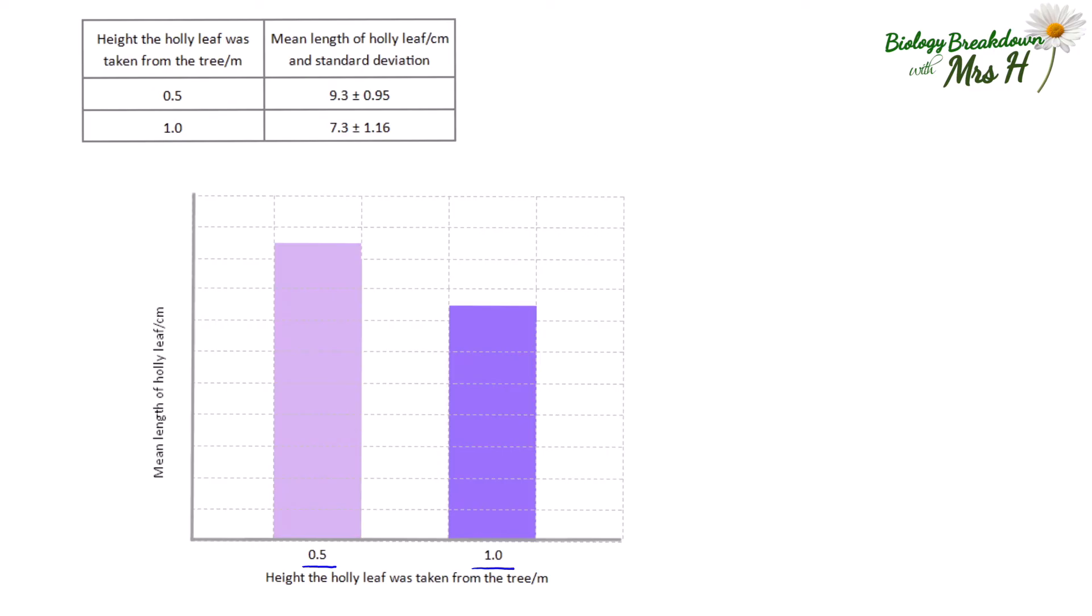You sometimes see the means written in this way. So if you have a look you've got 9.3 plus or minus 0.95. So that is one standard deviation above the mean and one standard deviation below the mean and then you've got 7.3 plus or minus 1.16.